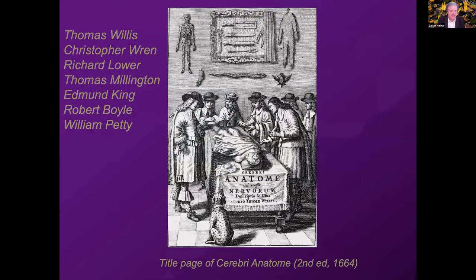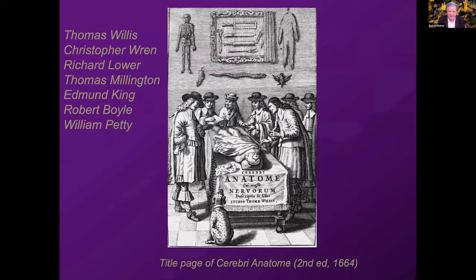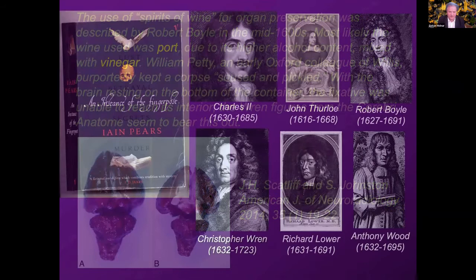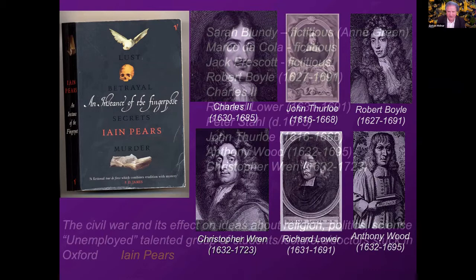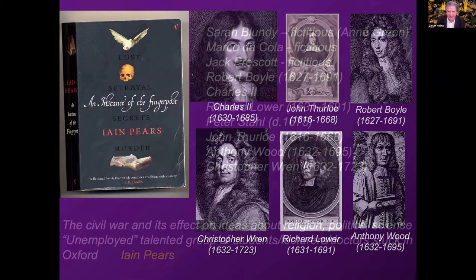Willis did not discover the mTOR pathway, so there's quite a bit of progress since then. I think the success and productivity of Willis is because he was working in this team. If you look at these names, they contributed to chemistry, blood transfusion, and many other disciplines. For instance, they used port and vinegar to conserve some of the brains — an idea of Robert Boyle, the chemist. This teamwork shows in the publications of Willis. If you're interested in this period, I really recommend Iain Pears's An Instance of the Fingerpost, which is a masterpiece — my favorite book ever. Iain is historically accurate: he has some fictitious characters, but they're also based on reality, and he also read Anthony Wood's publications on this period.